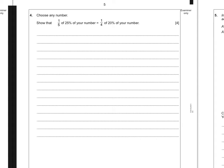Okay, for question four, we need to choose any number and show that one-fifth of 25% of the number is equal to one-quarter of 20% of your number. So for these ones, I always like to pick a nice, easy number like 100.